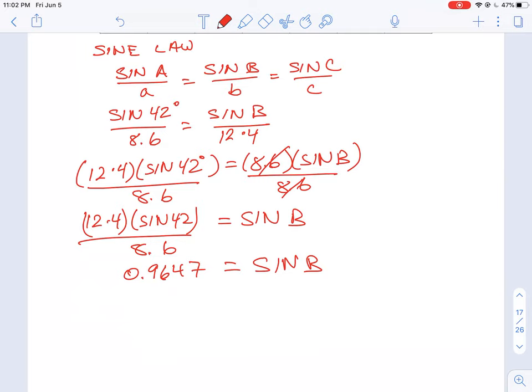So we have to use something called the inverse sine. So on your calculator that's going to be the second function of sine. In order to find angle B, we would write it out like this. We would use sine inverse or sine minus 1 of 0.9647.